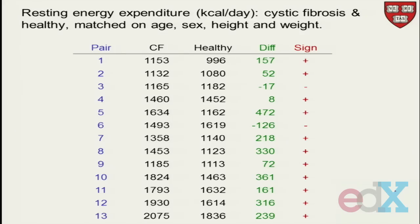We looked at the sign test, and the sign test doesn't take much information out of all of this. It just looks at the sign, and if we're testing that the median is equal to zero, then the sign is just the binomial, so it's nonparametric. Along comes Wilcoxon. He says, why do you just look at the sign? If we look at this — minus 126 counts the same as minus 17, but it shouldn't. It should count a little bit more because it's even bigger. An 8 counts as much as a 361. So we're losing information by just looking at the sign.